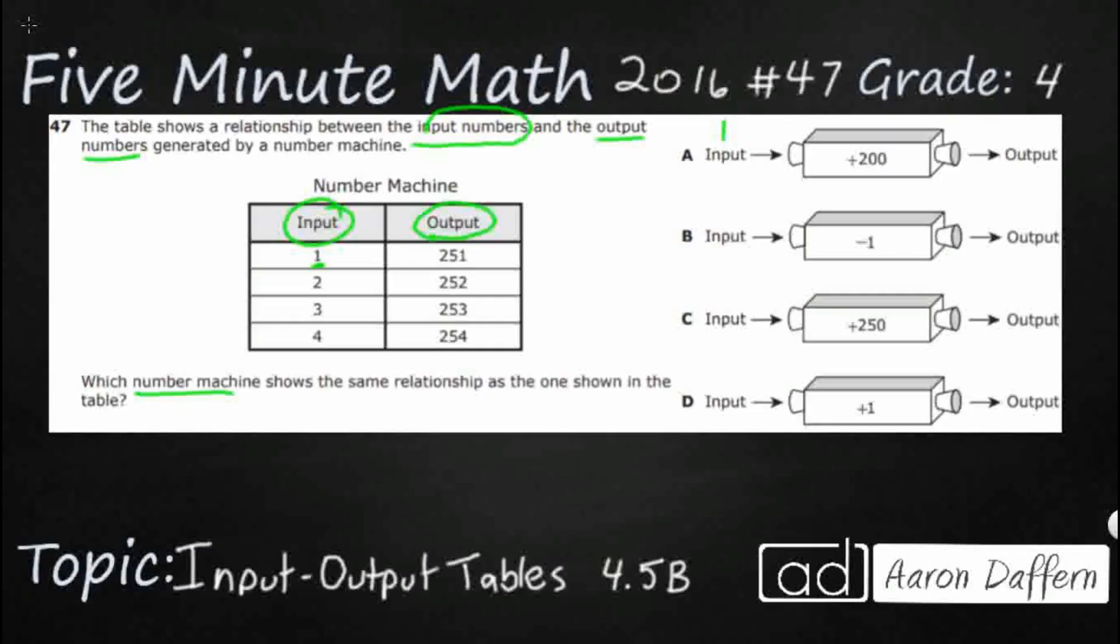We'll add 200 to it, and we'll see if we get our output. It should theoretically be 251, right? Or if we were to put in our input of 2, it should theoretically be 252. That's how that works.